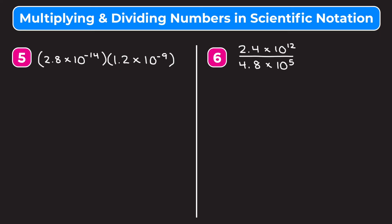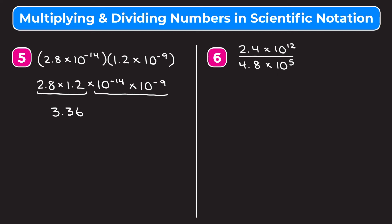For these last two examples, try pausing the video to solve them on your own. Example five is 2.8 times 10 to the negative 14th times 1.2 times 10 to the negative ninth. Rewriting as 2.8 times 1.2 times 10 to the negative 14th times 10 to the negative ninth: 2.8 times 1.2 is 3.36, and negative 14 plus negative 9 is negative 23, giving 10 to the negative 23rd. So the answer is 3.36 times 10 to the negative 23rd.